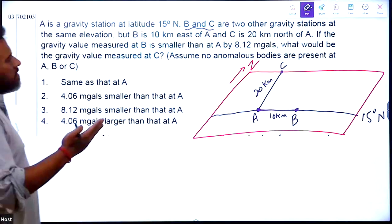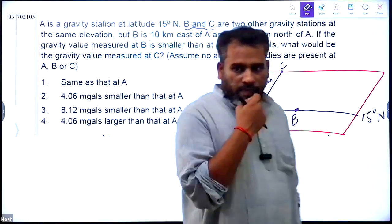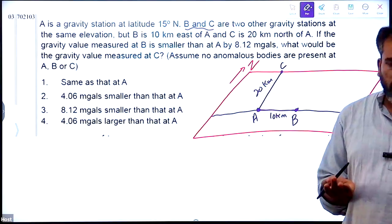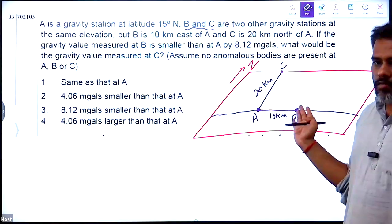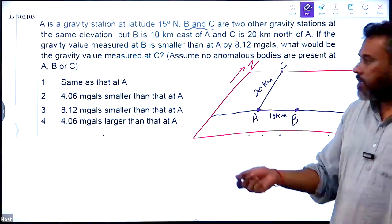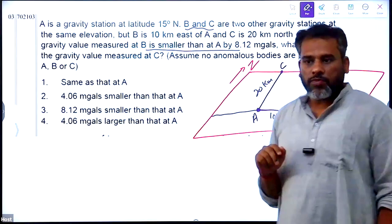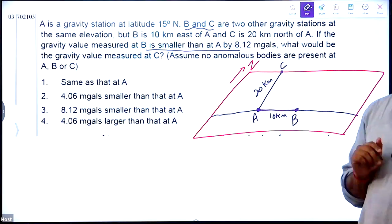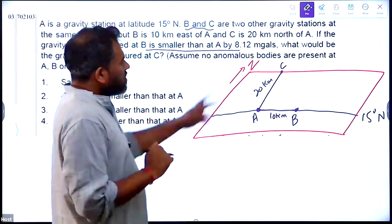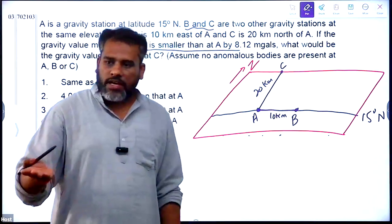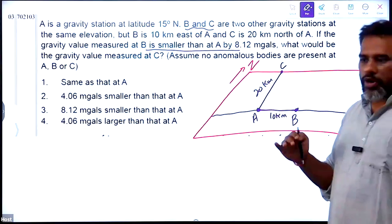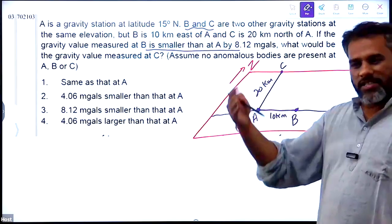If the gravity value measured at B is smaller than A by 8.12, it can only happen when B is at some height. Correct. So, it's smaller by 8.12 milligals. You can actually calculate the height. Take a combined correction. Let me apply combined correction. Point 2, so point 2 into height is equal to 8.